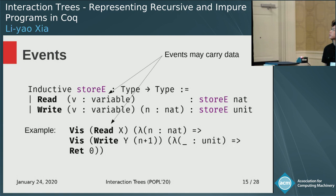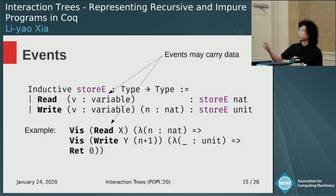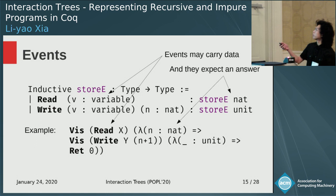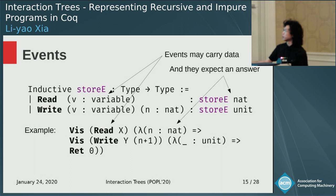These events can carry some data — for example, what variables you are reading from or writing to. The event type is indexed by the type of the answer: when you read, you expect a natural number as an answer, and when you write, you expect just a unit as an answer.